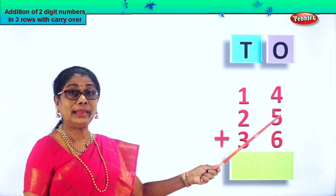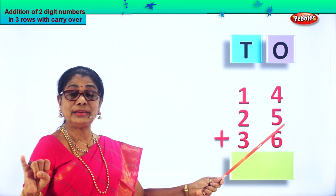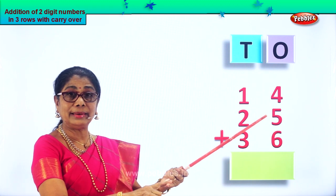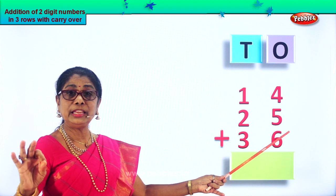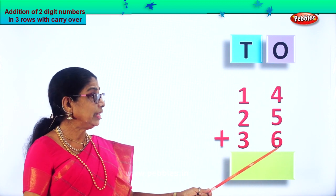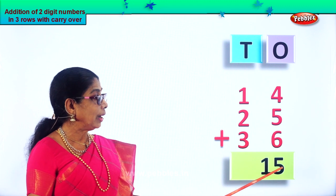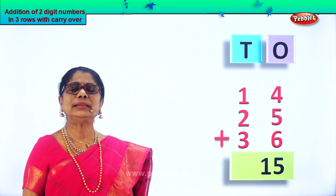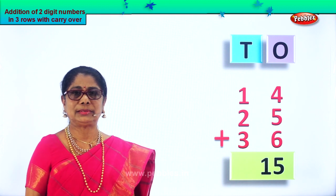Nine in the mind, then after nine: ten, eleven, twelve, thirteen, fourteen, fifteen. So we put the fifteen ones down. What is fifteen ones? One ten plus five ones.